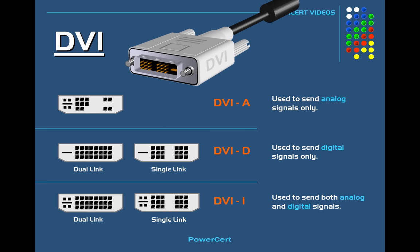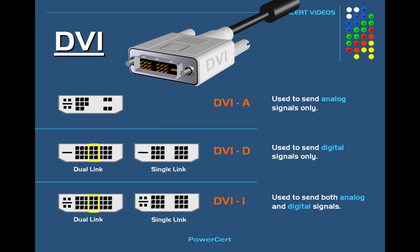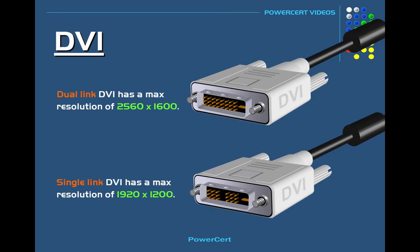On the ports that are able to send digital signals — DVI-D and DVI-I — there are two different options: single link and dual link. Dual link has six extra pins, which allows for a higher resolution than single link. Dual link DVI doubles the video bandwidth with a max resolution of 2560 by 1600, whereas single link DVI has a max resolution of 1920 by 1200. The DVI end adapter will typically have a white color.